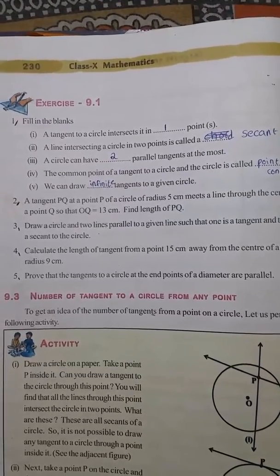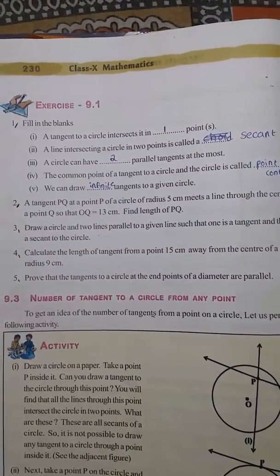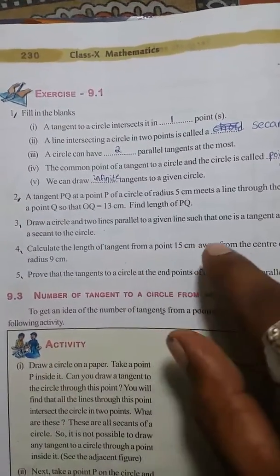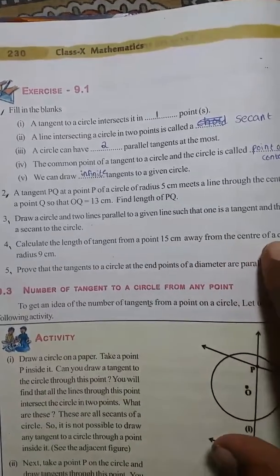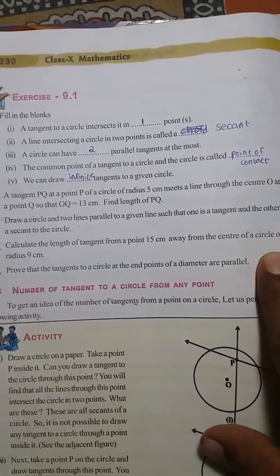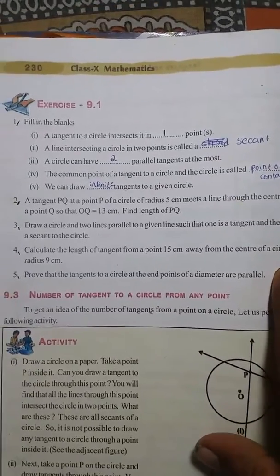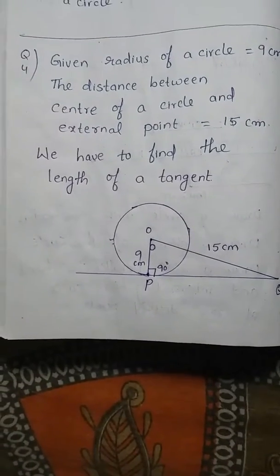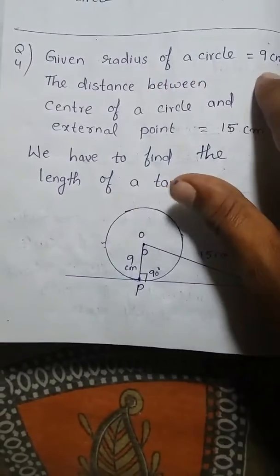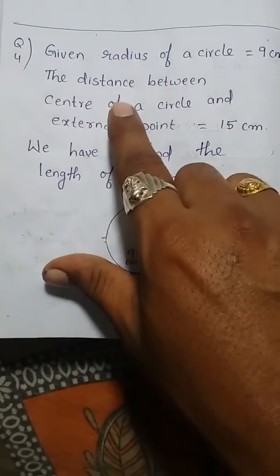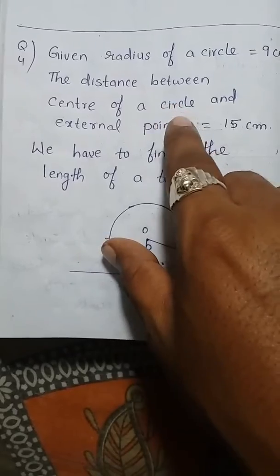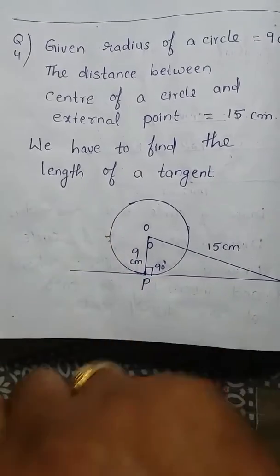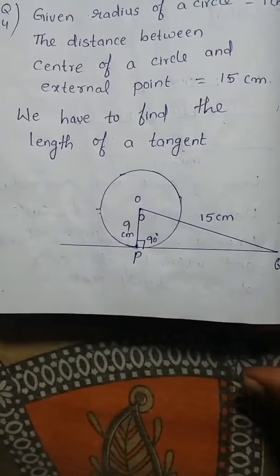Page number 230, tangents and secants to a circle, exercise 9.1, question number 4: calculate the length of a tangent from a point 15 centimeters away from the center of a circle of radius 9 centimeters. We have to find the length of the tangent. Given: the radius of a circle is 9 centimeters and the distance between the center of the circle and the external point is 15 centimeters.